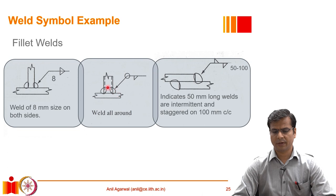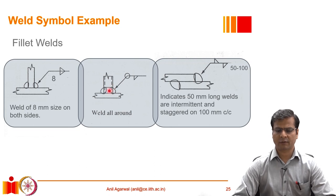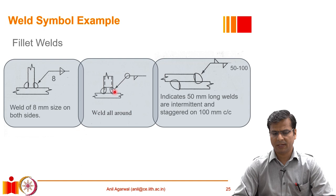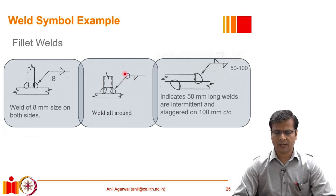If a hollow tube is welded to a plate, we cannot weld from inside due to lack of access. So the weld is only on the outside, and the fillet symbol is placed only below the line. In addition, a small circle drawn at the corner of the arrow indicates that this weld is to be provided all around the tube.